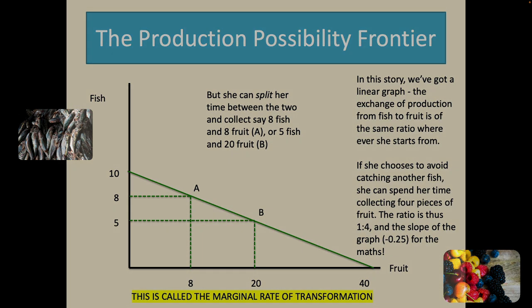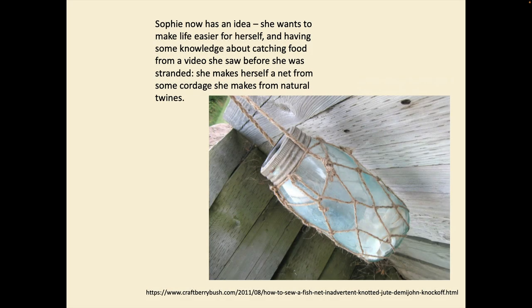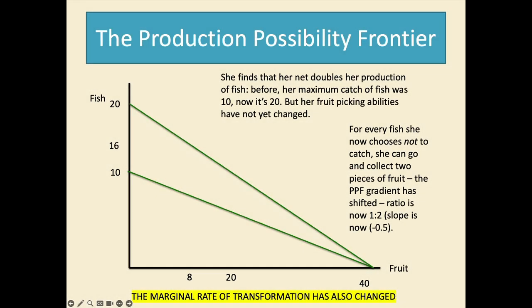Sophie now has an idea. She wants to make life easier for herself and having some knowledge about catching food from a video she saw before she was stranded, she makes herself a net from some cordage or twine that she makes. She finds that her net doubles her production of fish. Before her maximum catch of fish was ten and now it's twenty. But her fruit picking abilities have not yet changed.